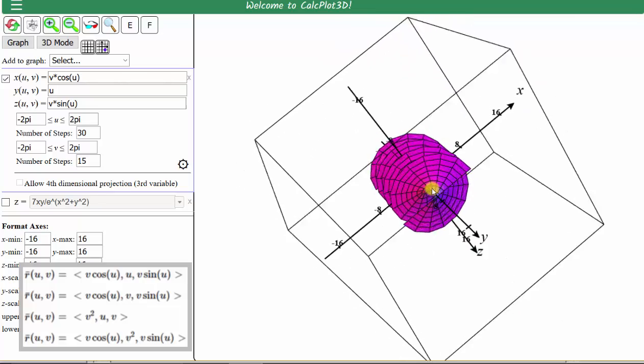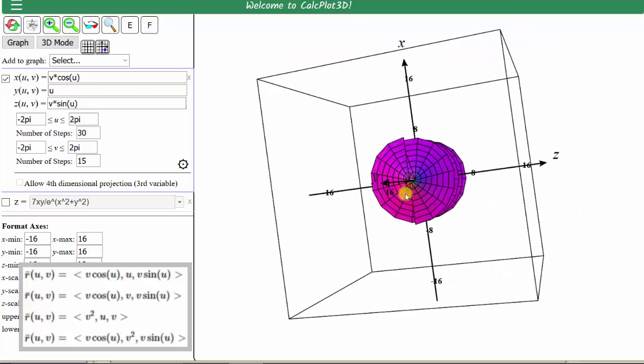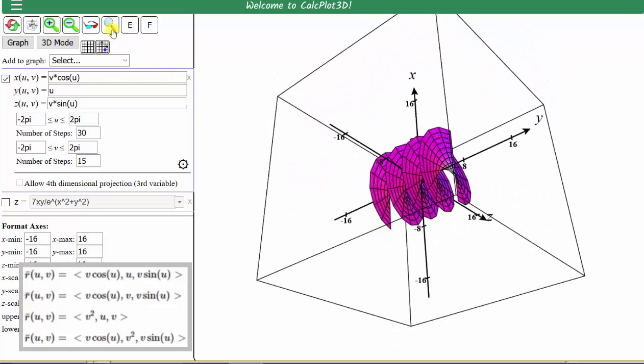This surface is called a screw or helicoid. We can also make the surface transparent by clicking on this magnifying glass.